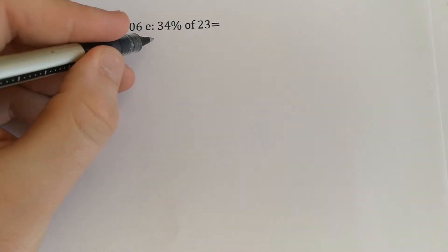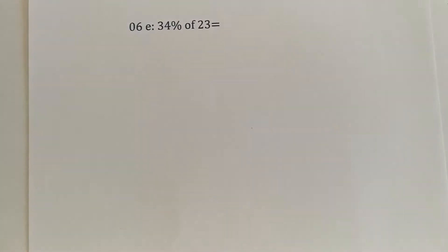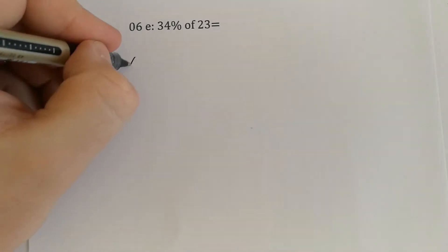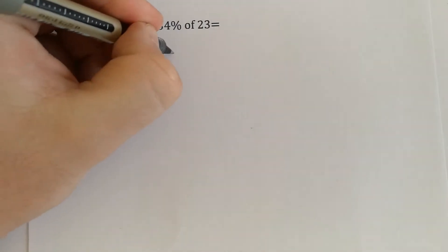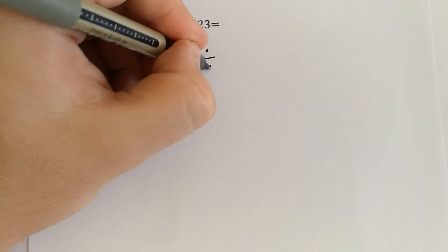34% of 23. The first step is we need to turn this percentage into a decimal, and questions 6 a, b, c, and d will help you with that. So we've got 34%, which just equals 34 divided by 100.